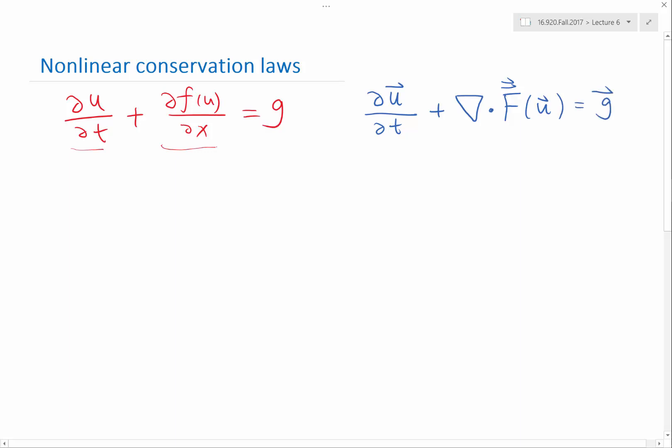So this is the most general form of nonlinear conservation law. So here, the u is a m-dimensional vector.